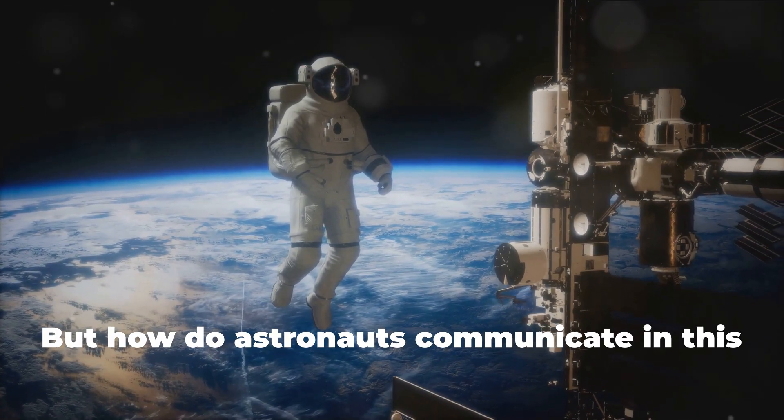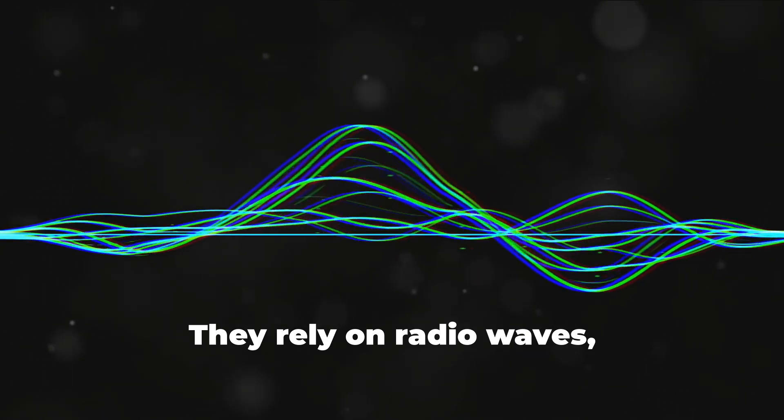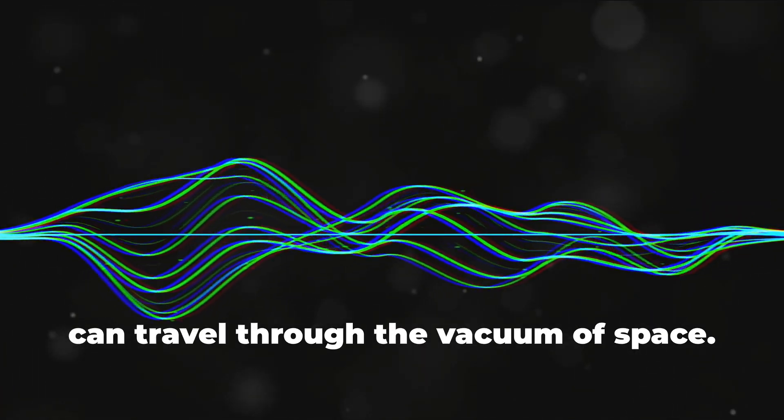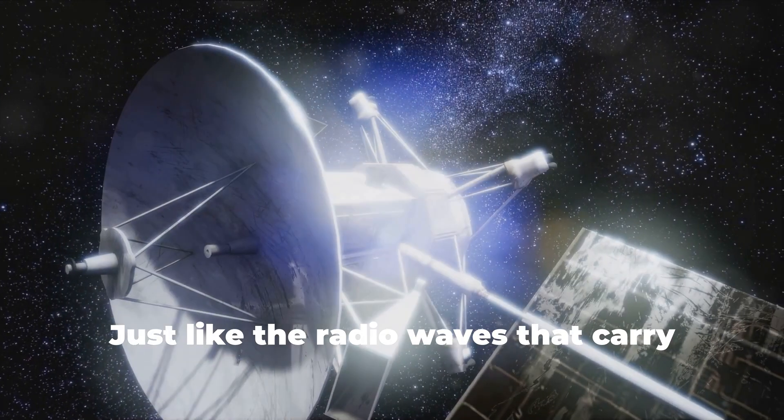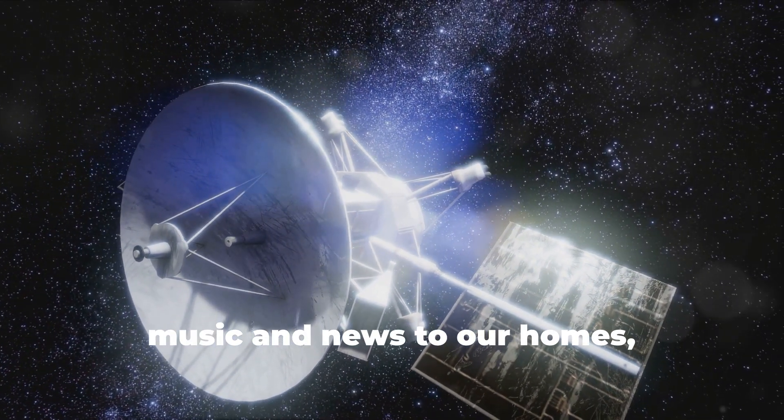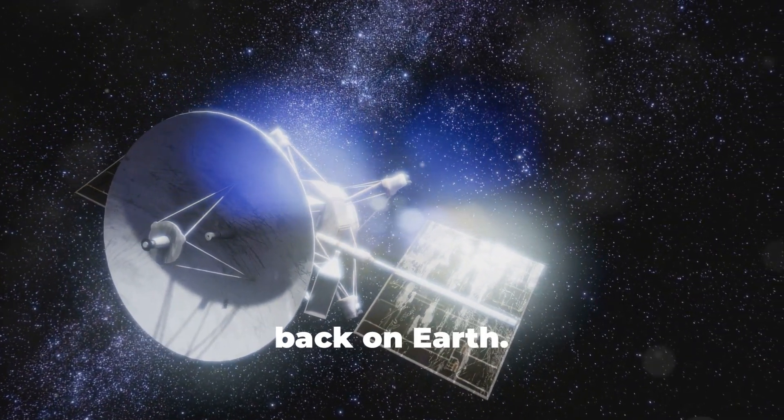But how do astronauts communicate in this silent world? They rely on radio waves, a form of electromagnetic radiation that can travel through the vacuum of space. Just like the radio waves that carry music and news to our homes, astronauts use radio waves to communicate with each other and with mission control back on Earth.